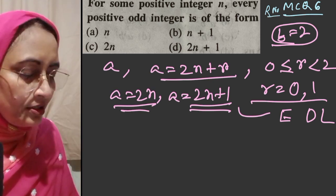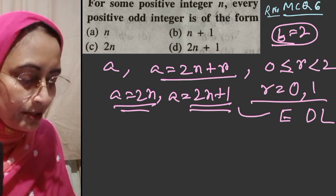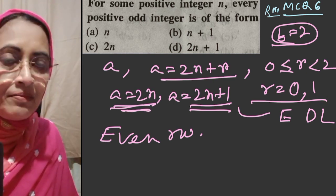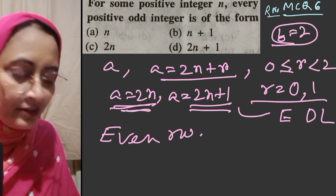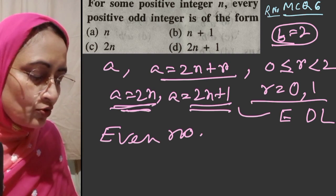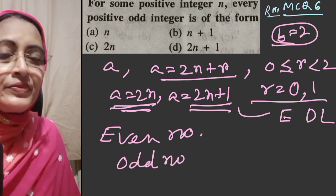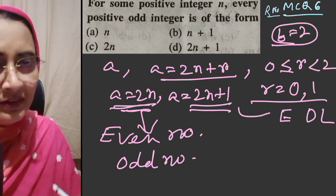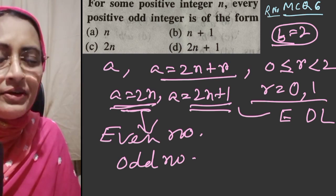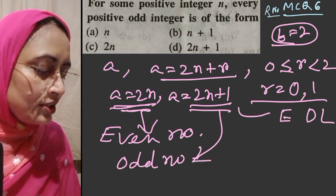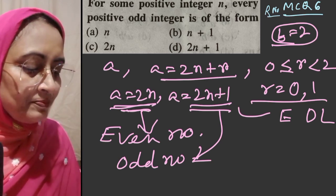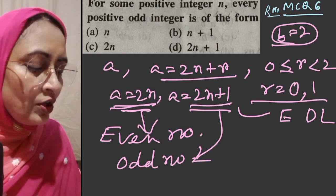Since any multiple of 2 is an even number, 2n represents even numbers. All integers are either even or odd, so 2n+1 must be odd. Every positive odd integer is of the form 2n+1. For example, if n=1: 2(1)+1=3; if n=2: 2(2)+1=5. Note that the question says 'positive integer n', so 0 is not included, meaning 1 can be represented as 2(0)+1 only if n is a whole number. The answer is 2n+1, option D.